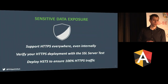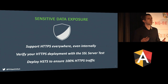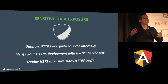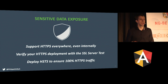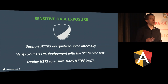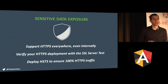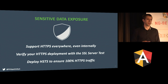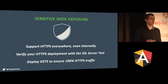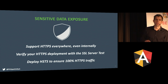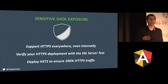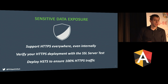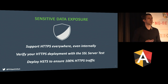This brings us to the first OWASP overview point: Sensitive Data Exposure. The solution is to support HTTPS everywhere, even internally on your company network. Verify your HTTPS deployment, and if you have HTTPS deployed, ensure you have HSTS enabled as well. It's really necessary to step up security there.